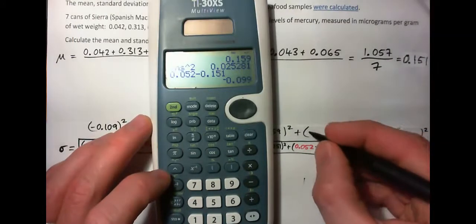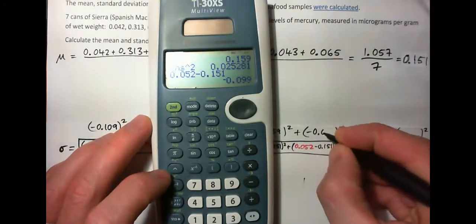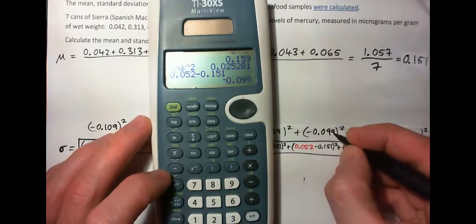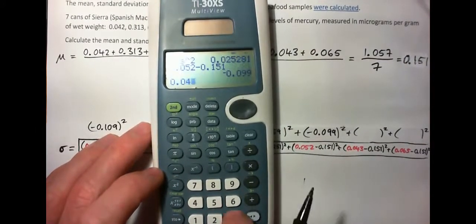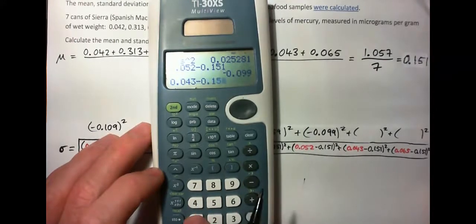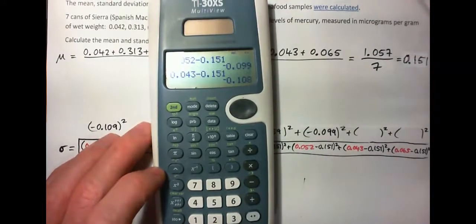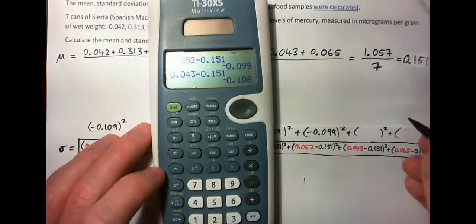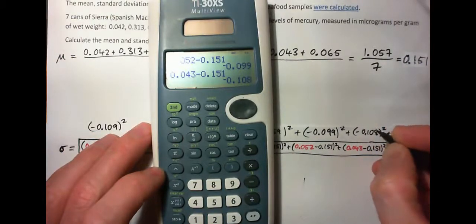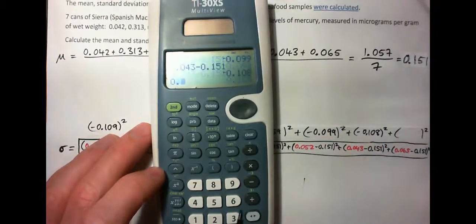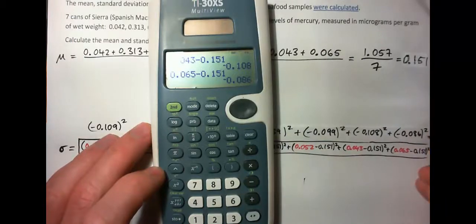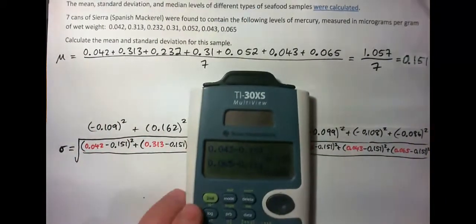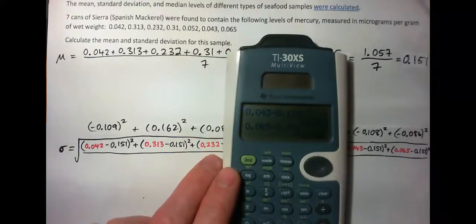If I was smart, I would have squared each answer in turn like that, but that's okay. 0.159. I'll just go through it step by step to make it minus 0.151, and then enter. That would be negative 0.099. And the next one, 0.043 minus 0.151, negative 0.108, and 0.065 minus 0.151, negative 0.086. And then we square each one in turn.